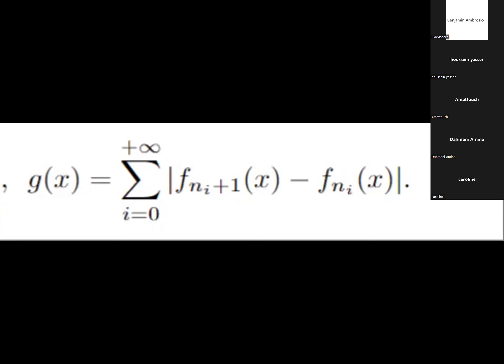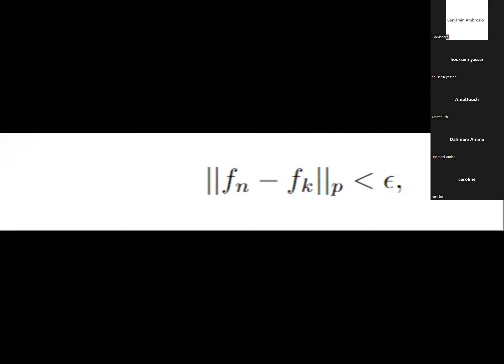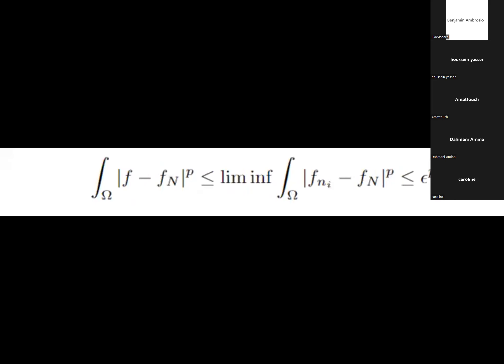After that, once you have that, you get back to your initial f_n. Since it's Cauchy, you can have this inequality. But then I can just elevate to the p. And from Fatou's lemma, you get this thing from taking the limit on f_{n_i}. And this gives you the result. So we just proved that any Cauchy sequence in L^p converges in L^p.